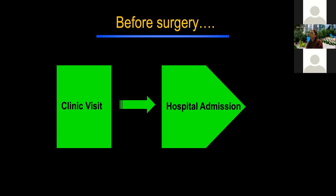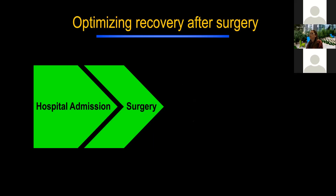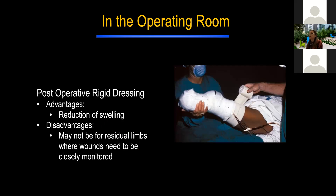Before surgery, if it's not a traumatic amputation and they're admitted to the hospital, we can be seen by us to assess the situation. If they ask whether the amputation level should be a through-knee or above-knee, we can provide functional considerations about both. After surgery, we make recommendations about whether they're a candidate for a post-op rigid dressing. Some people aren't, but if they are, this may hasten their ability to move on to prosthetic ambulation.